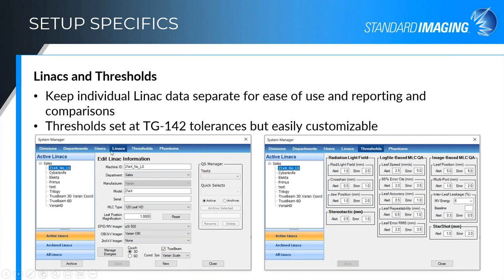The setup process is very easy. For a linac setup, you enter your machine ID, your department, your manufacturer, model, and what type of MLCs — six-degree couch, 30-degree couch, and so on. Thresholds come preloaded with TG-142 threshold recommendations and can be tightened or loosened as you see fit within your department. The same applies to users and divisions — very easy setup for the system manager.